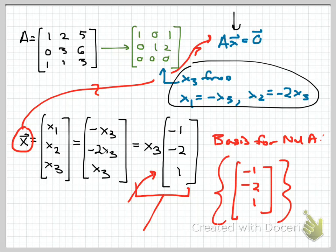We don't have a quick theorem for the null space. What we need to do is solve Ax = 0 and look at the parametric form of the solution. The numerical vectors that show up in the parametric form — this time only one, but possibly more in other cases — form the basis for the null space.